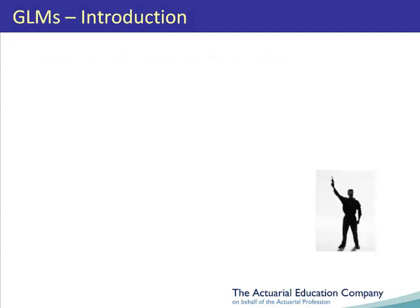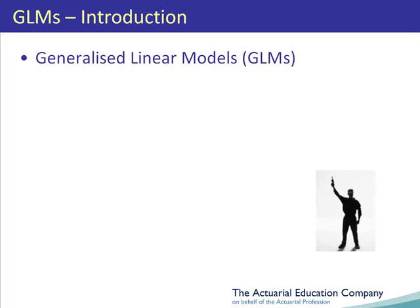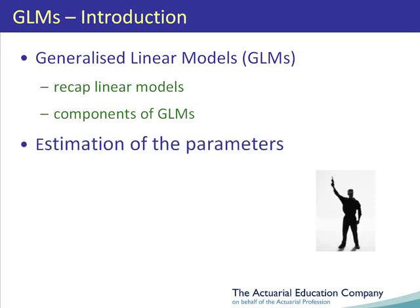In this unit, we'll begin our study of generalised linear models, or GLMs for short. We'll start by recapping linear models from CT3. We'll then see how we can generalise these and the three components that define a generalised linear model. Finally, we'll look at how we can estimate the parameters in the model using maximum likelihood estimation.